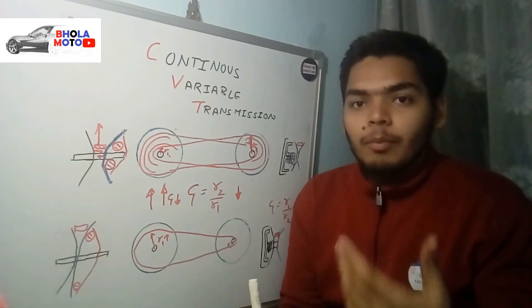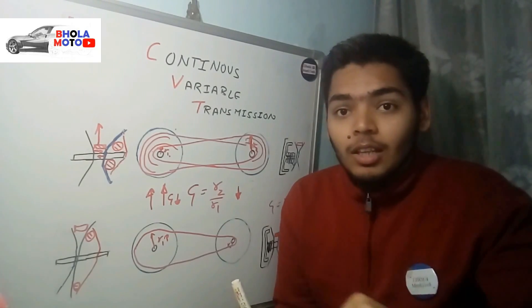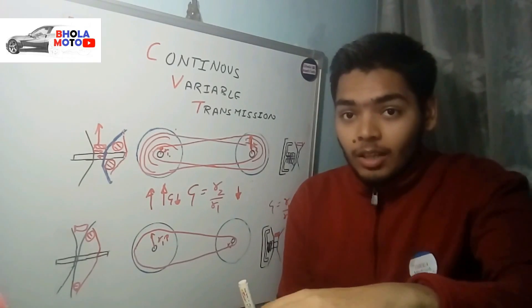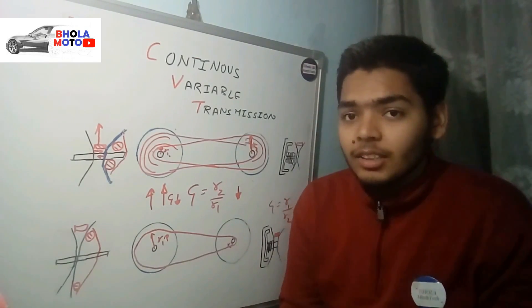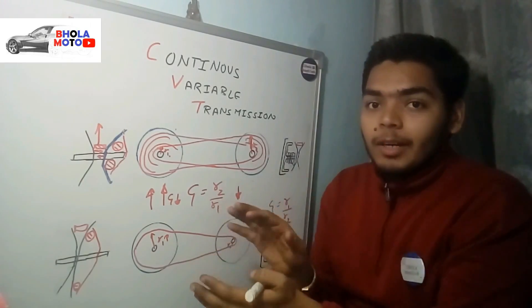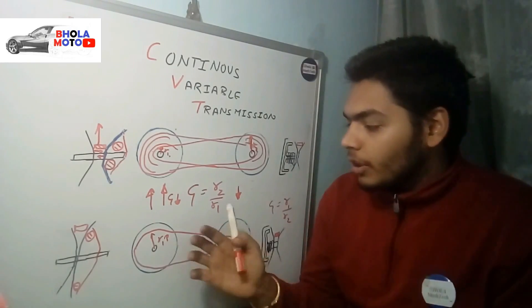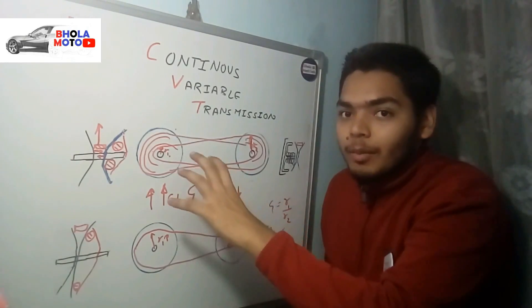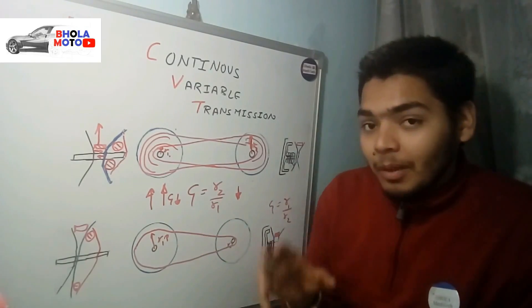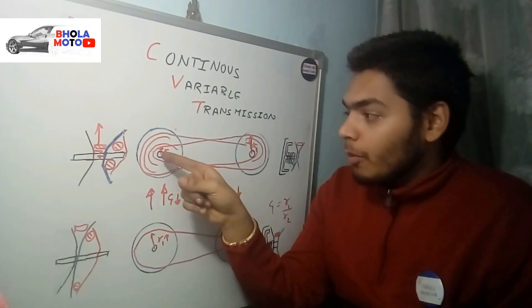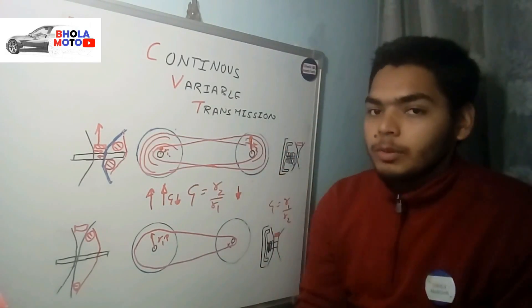This is similar to manual transmission — at slower speeds you use a smaller gear, and at higher speeds you increase the gear. CVT does this automatically, without a gear lever or gear shifting, by moving the belt from lower position to higher position and vice versa.